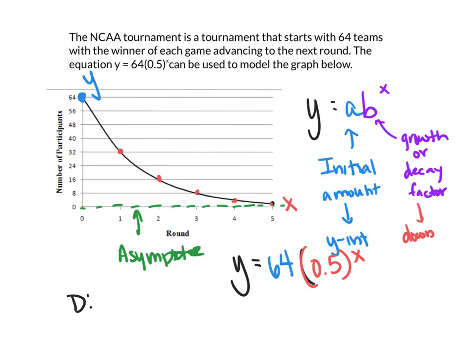And then we want to talk about our domain. Remember your domain is your x value. So the domain here is going to be the number of rounds that you play. So we can see that the domain, you start off with 0 rounds and you're going to stop when you get to your fifth round, because you can't play any more rounds after that.